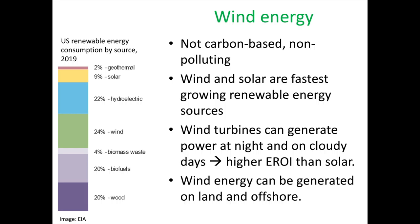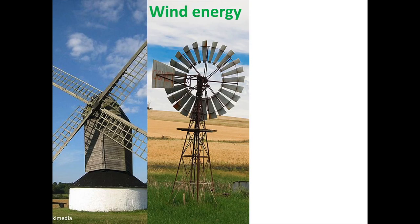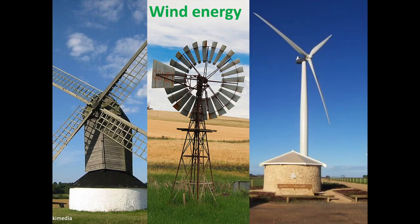Another advantage of wind energy is that it can be generated on both land and offshore, as long as there are areas of consistent winds. We have been making use of the power of wind for centuries for milling grains, as shown in the 17th century windmill in the UK, pumping water, here a windmill in Australia, and now for generating electricity. Wind turbines were first used to generate electricity in rural areas in the early 1900s, but electrification projects that connected rural areas to the grid caused a decline in wind electricity generation. Using wind for electricity generation caught on again in the 1980s, and really took off in the early 2000s with the advent of modern turbines.